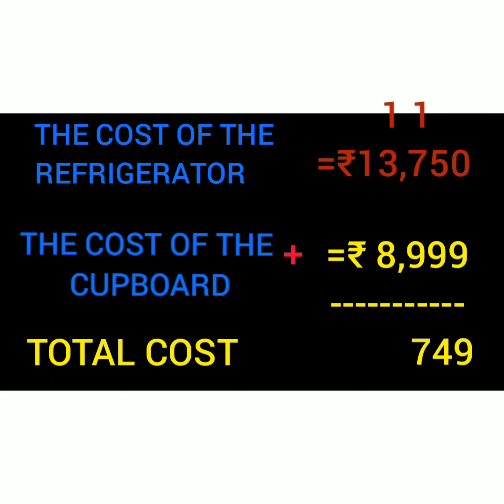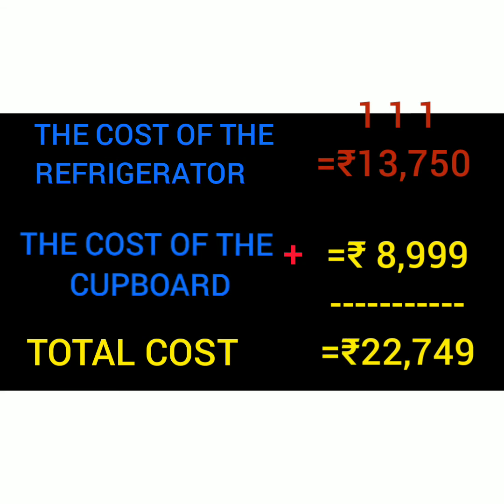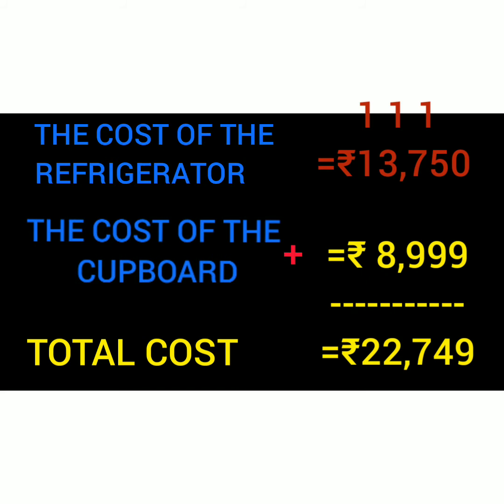Now 1 plus 3 is 4, and 4 plus 8 is 12. Write 2 and 1 carry over. Now 1 plus 1 is 2. So the shopkeeper must be paid Rs. 22,749. Both things — total cost is Rs. 22,749. So I have to pay this amount to the shopkeeper.